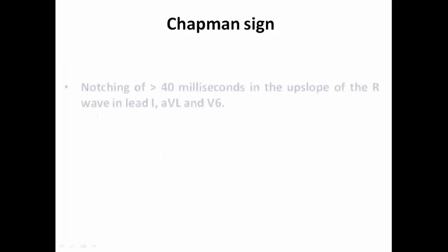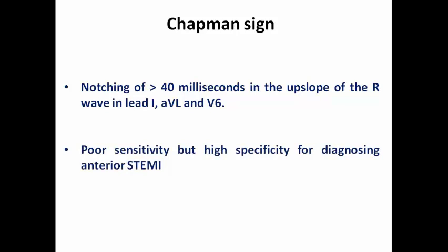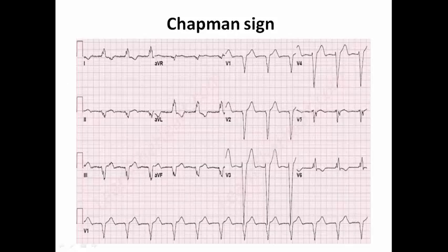Regarding the Chattman sign, it has the same idea. It is notching of more than 40 milliseconds, but in the upslope of the R wave in leads I, aVL, and V6 — the lateral leads. It has poor sensitivity but high specificity for diagnosing anterior STEMI. In this example we can see notching in the upslope of the R wave in leads I, aVL, and V6. This is called the Chattman sign and suggests that the left bundle branch block is most probably acute, caused by STEMI.